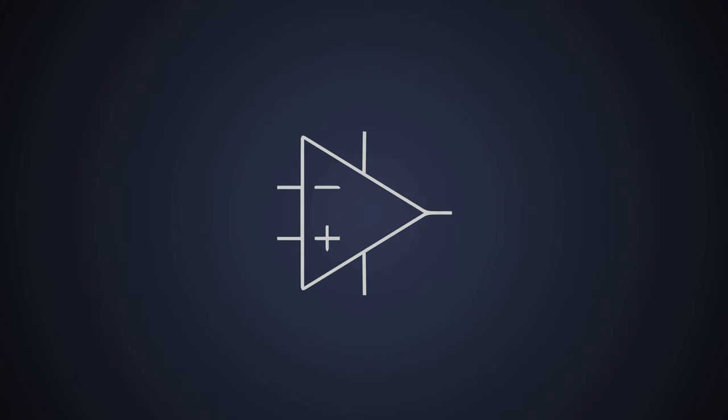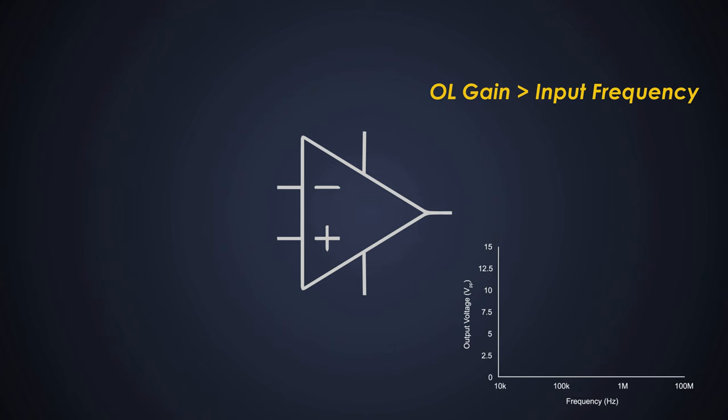Now, before selecting an op-amp, we should make sure that the open-loop gain of this op-amp is higher than the signal input frequency. Large signal performance may be limited by slew rate. So we need to check the maximum output swing versus frequency plot in the datasheet to minimize the slew rate induced distortion.